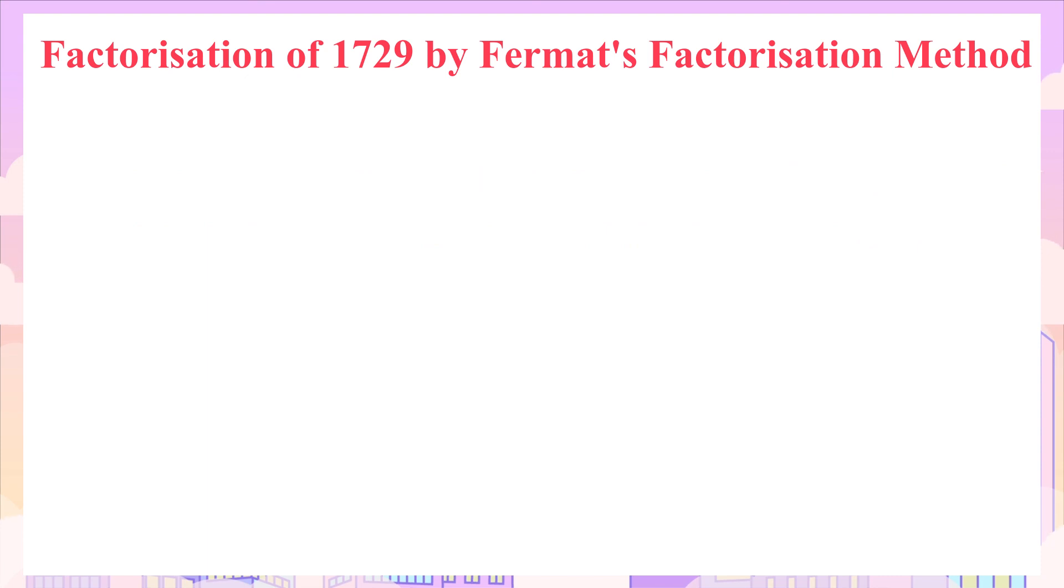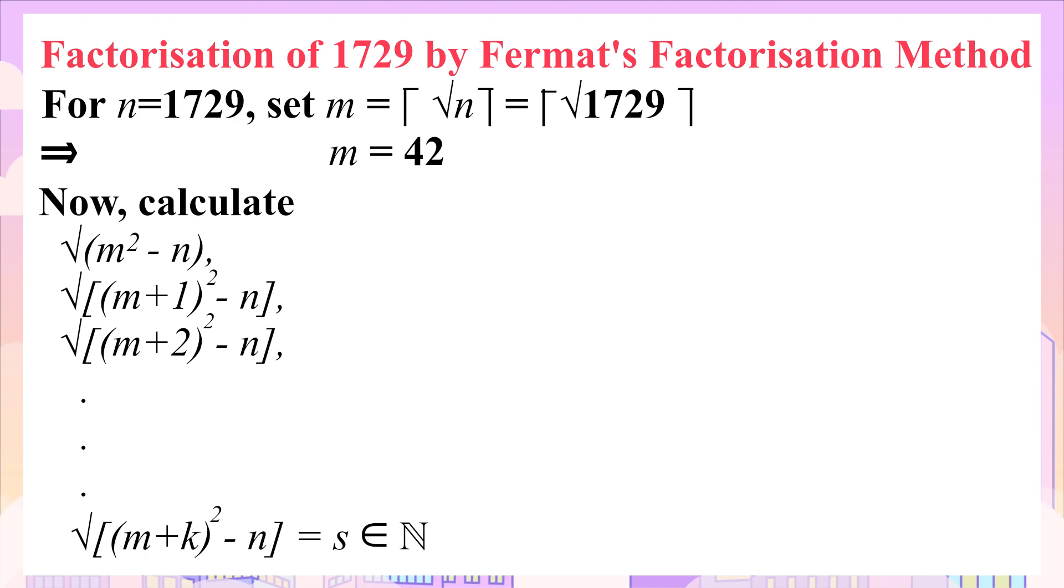Firstly, we factorize 1729 by the Fermat's factorization method. In the first step of factorization, let's set a value m which is equal to the ceiling function of square root of n. The ceiling function of a number is defined as the smallest integer greater than that number. So, the value of m is 42. Secondly, we compute the following values by putting the values of m and n where k is a natural number. These values are calculated until we obtain a natural number.